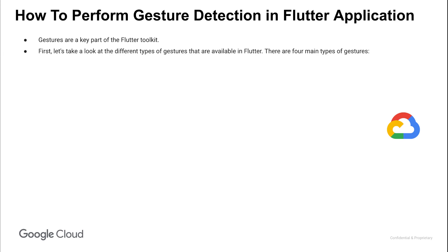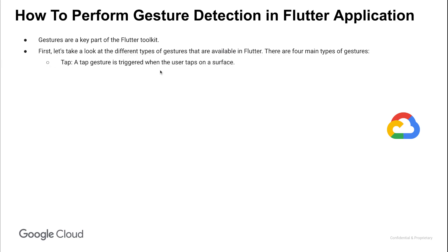First, let's take a look at the different types of gestures that are available in Flutter. There are four main types of gestures. Tap — a tap gesture is triggered when the user taps on a surface.